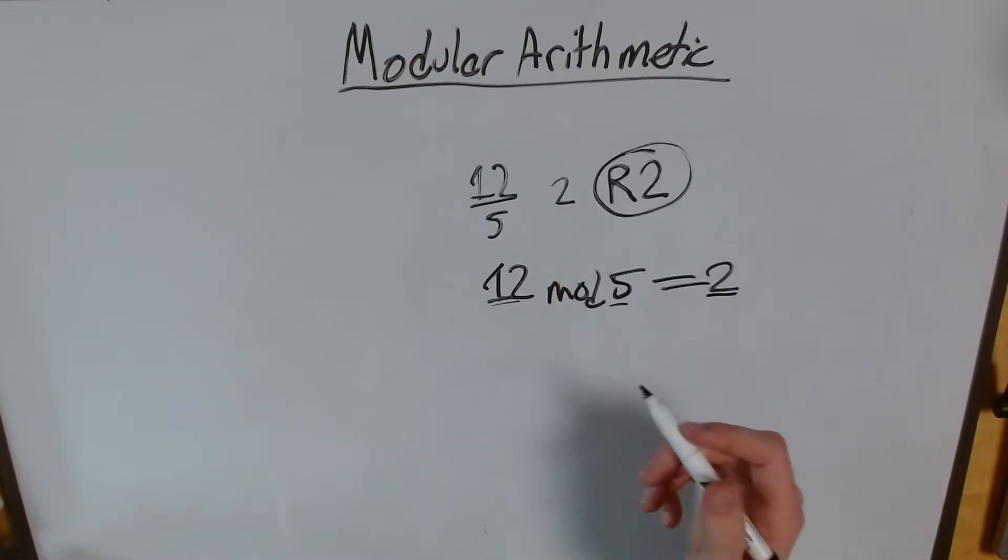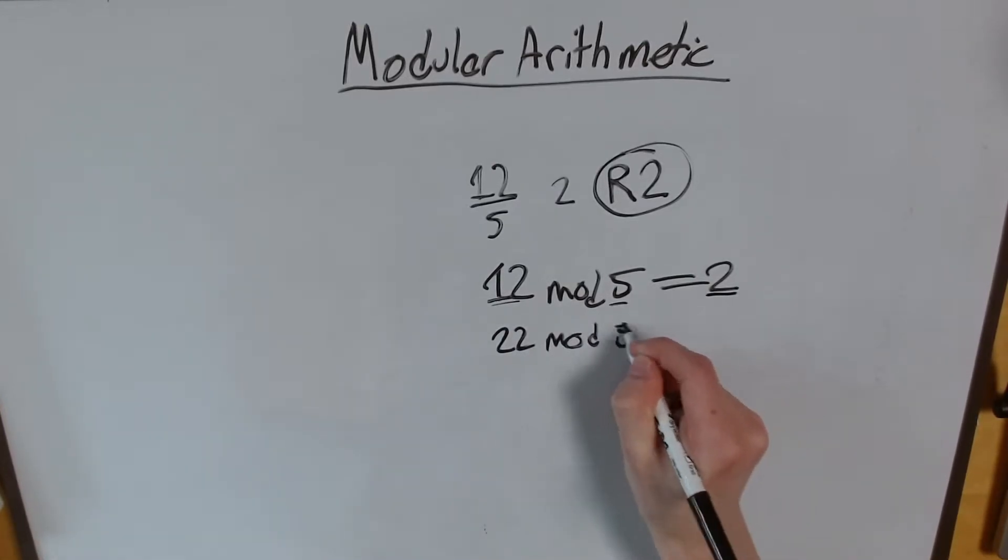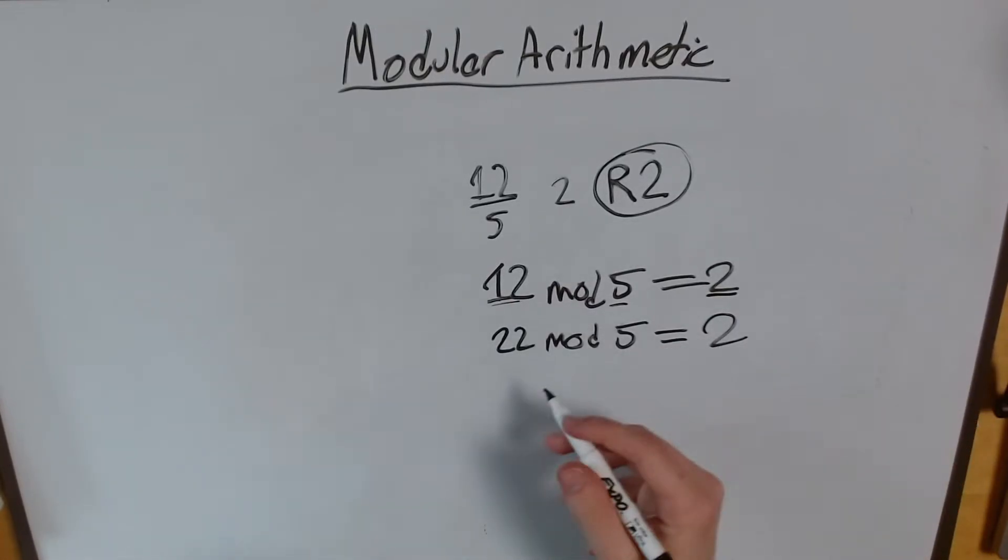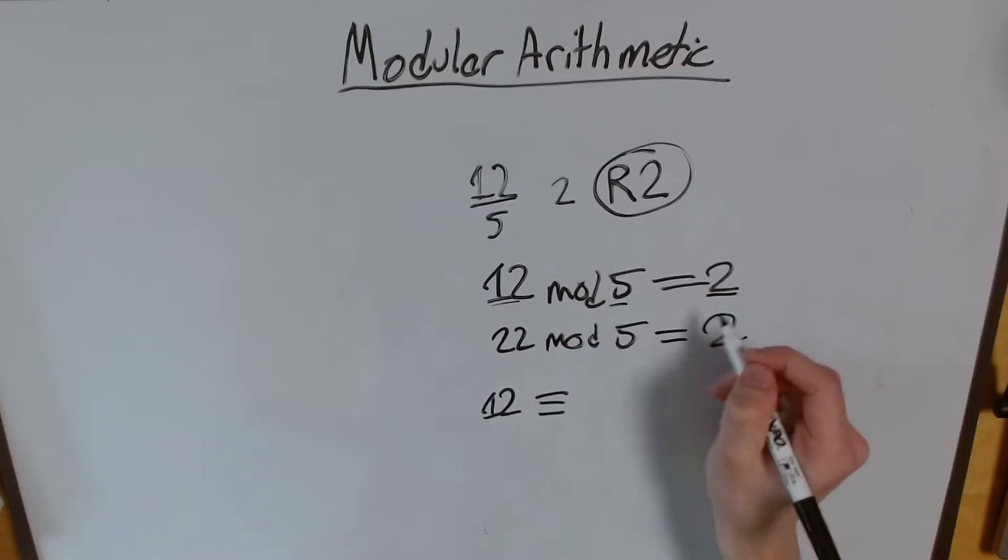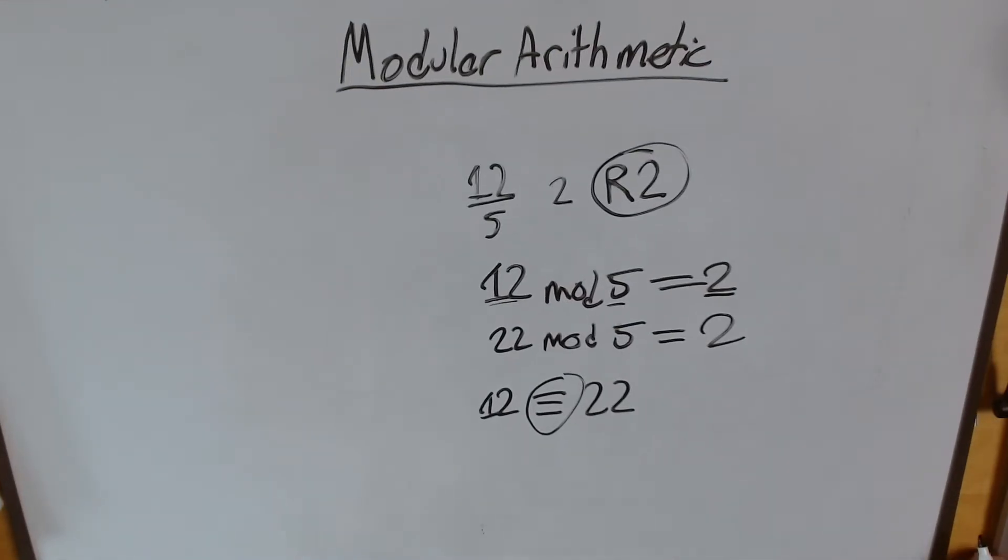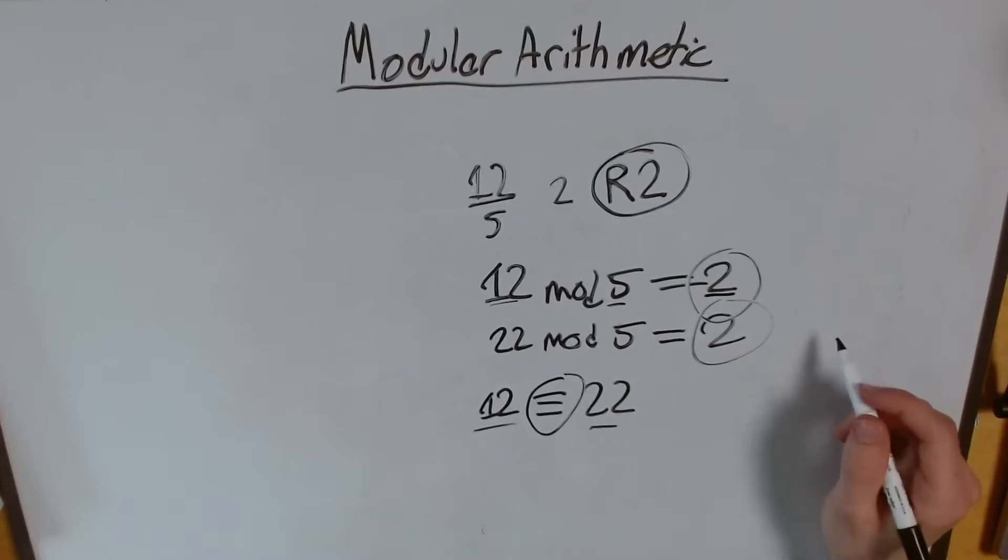And this applies to other cases, too. For example, we would agree that 22 divided by 5 is also equal to 2. And so in this case, we can say, well 12 has the same modulus as 22, and notice how we use a triple equal sign. This basically represents that if we're doing modular arithmetic, these two things both get the same result, the same remainder produced.